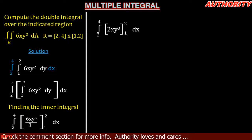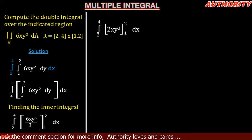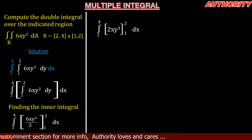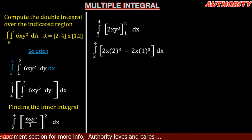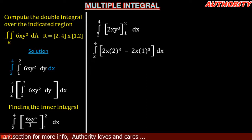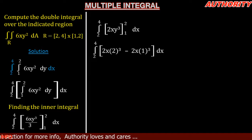We plug in the upper boundary minus the lower boundary. In the function 2xy³, wherever we see y we replace it with the upper boundary 2, then subtract the result with y replaced by the lower boundary 1. So we get: 2x(2)³ minus 2x(1)³.